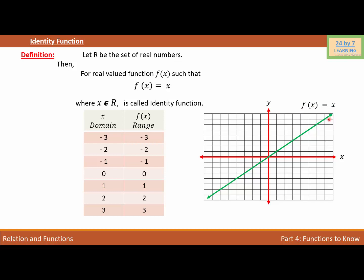The reason we call it the identity function is because the value of the function is the same as the value of x.